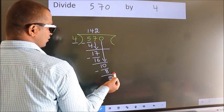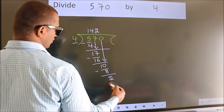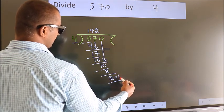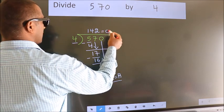No more numbers to bring down. So we stop here. This is our remainder. This is our quotient.